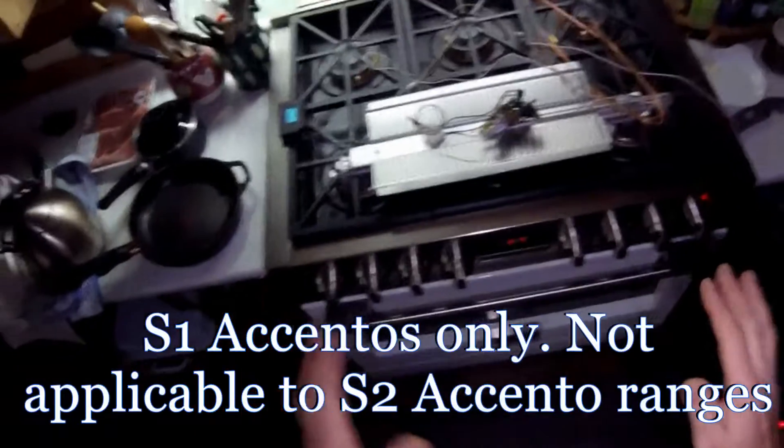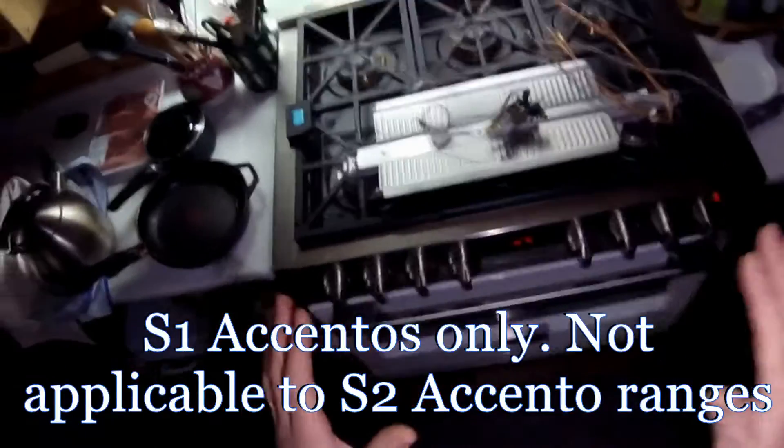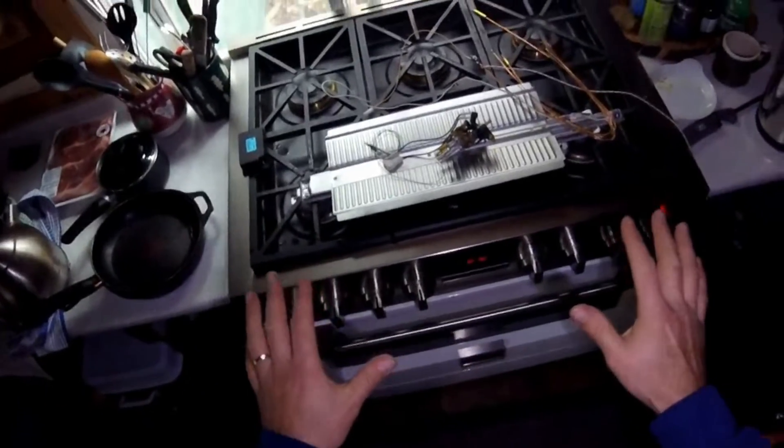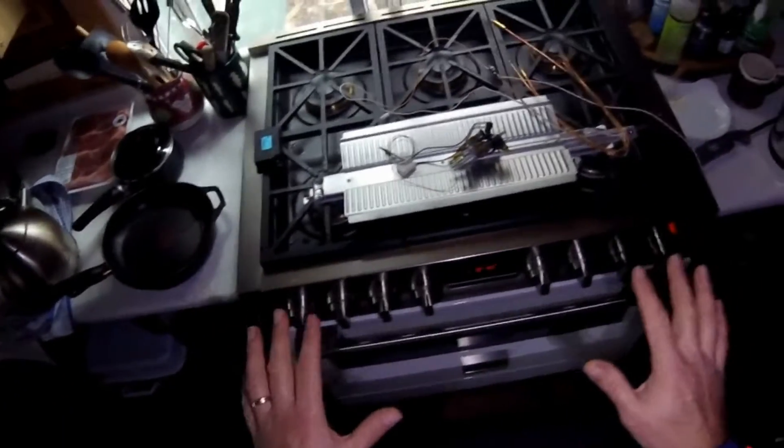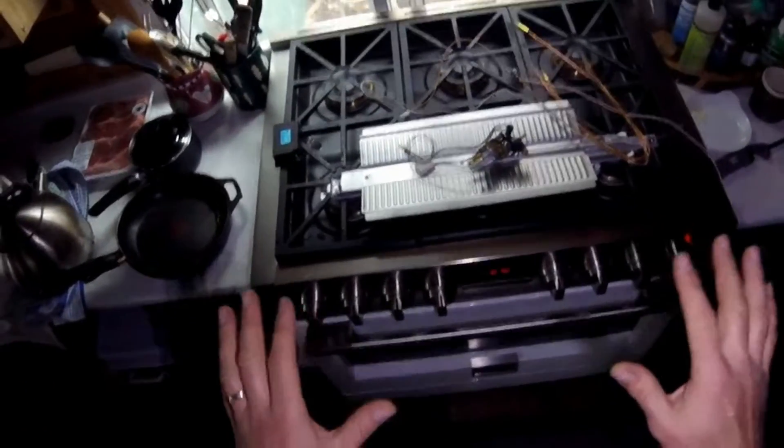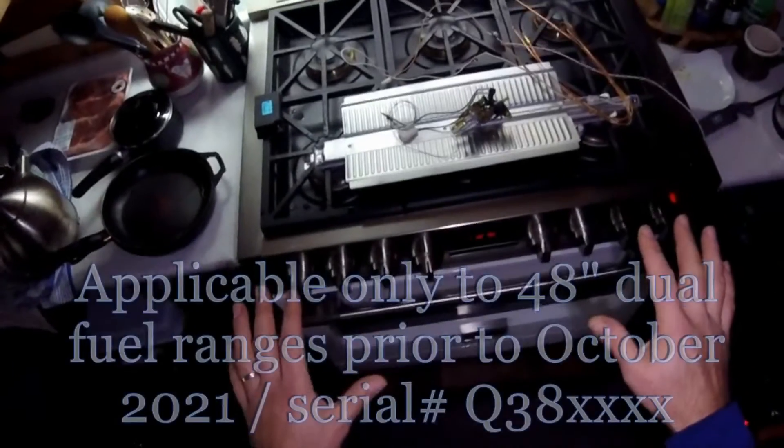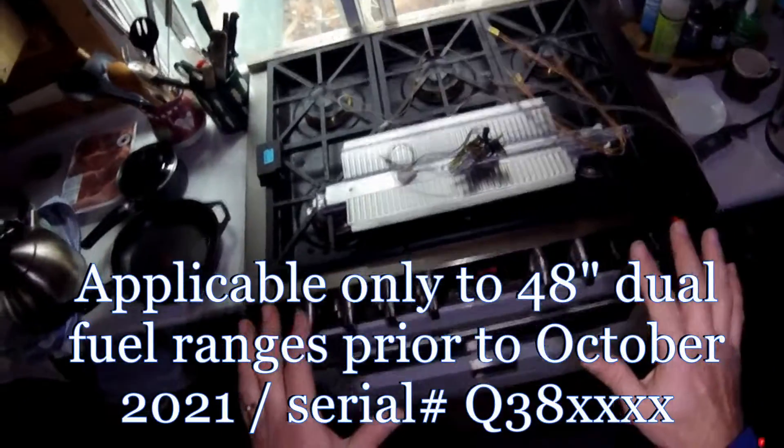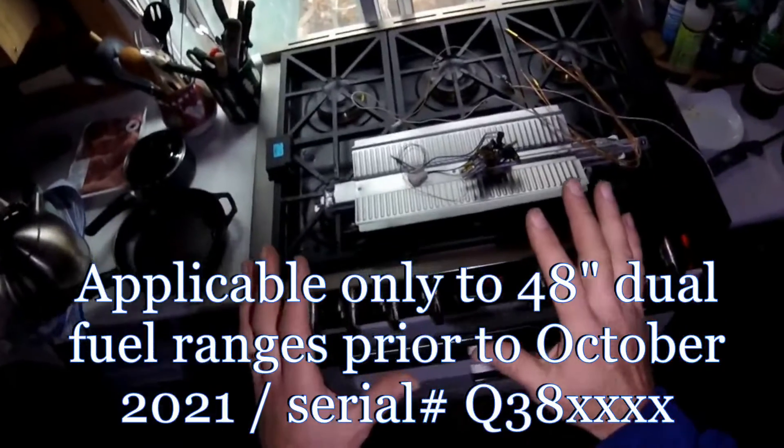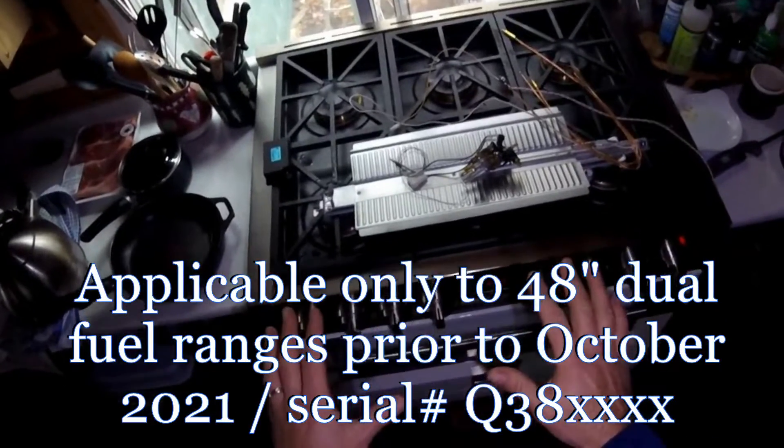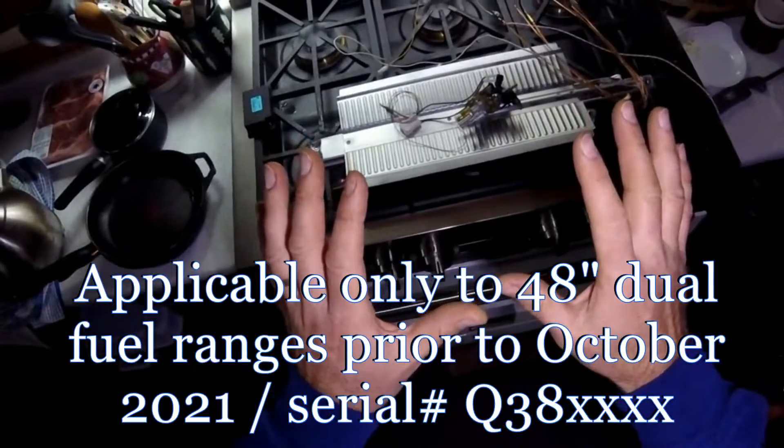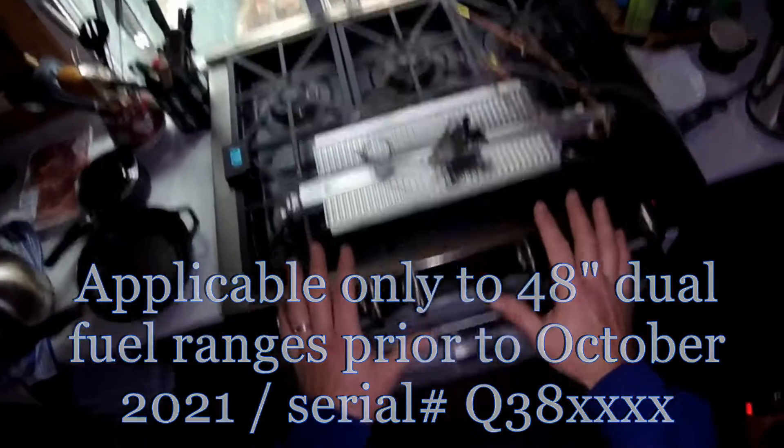But the Accento, which is the newer line, the Accento all gas ranges also use this system. And interestingly enough, this will also be applicable to the dual fuel 48 inch SOFIA range, which is electric ovens and gas cooktop. But there's also now a gas griddle on that model, and that griddle uses this very similar system.